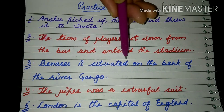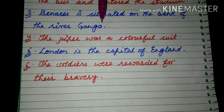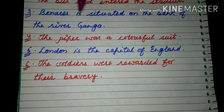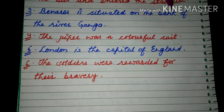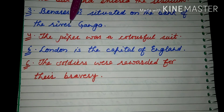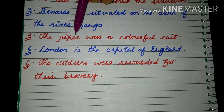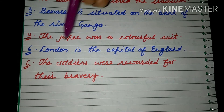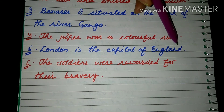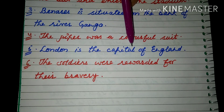'Banaras is situated on the bank of the river Ganga.' Banaras is a proper noun, Ganga is a proper noun — both are proper nouns. Is situated is a verb, on is a preposition, the is an article, bank is a common noun, and river is a common noun. Next: 'The piper wore a colorful suit.' Piper and suit are common nouns, colorful is an adjective. 'London is the capital of England.' London and England are proper nouns because they specify a particular place, and capital is a common noun.